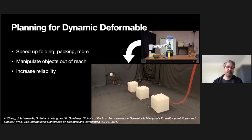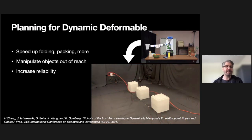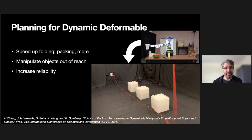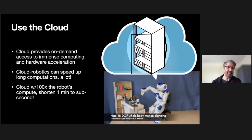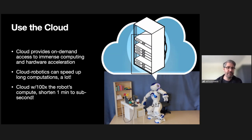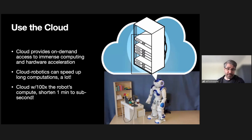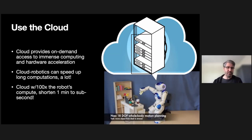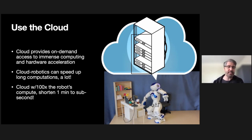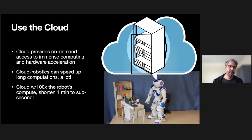In a similar vein, I'm looking at dynamic deformable manipulation, given that a lot of the world is deformable. If we can use dynamics, we can potentially speed up folding and packing, manipulate objects that are out of reach, and increase reliability. Also, using the cloud is a really exciting avenue for speeding up computation. If you have a hundredfold improvement of computing using the cloud, then you can take something that takes over a minute to compute and make it a sub-second computation, accelerating manipulation plans to be practical instead of waiting for onboard computing hardware to catch up.